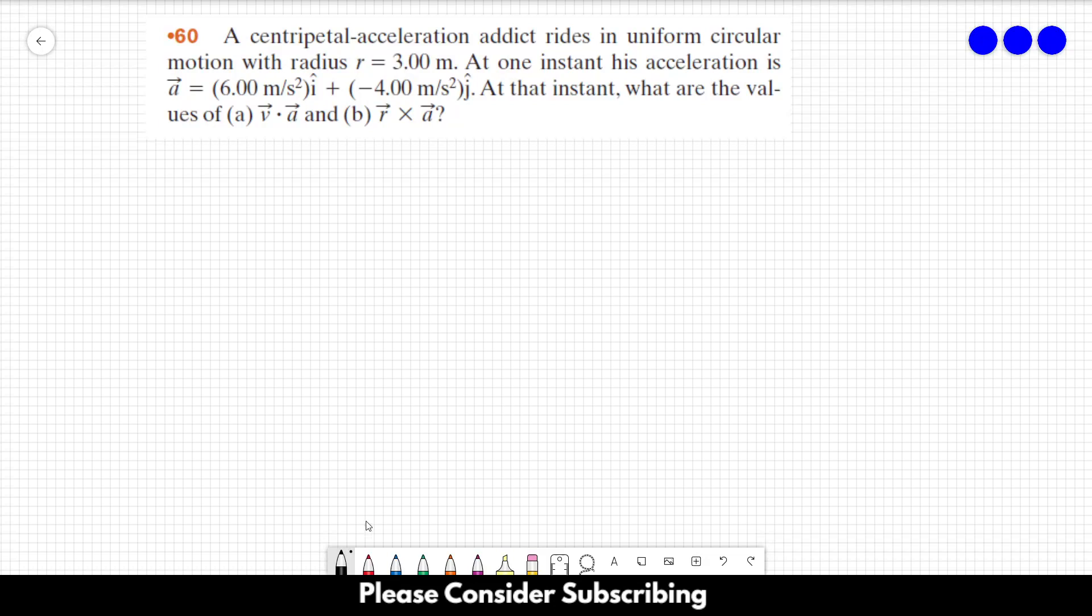Number 60: A centripetal acceleration addict rides in uniform circular motion with radius 3 meters. At one instant,